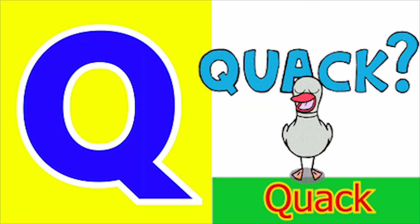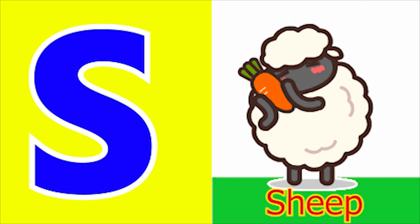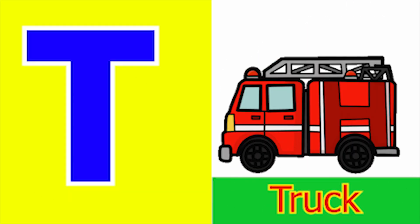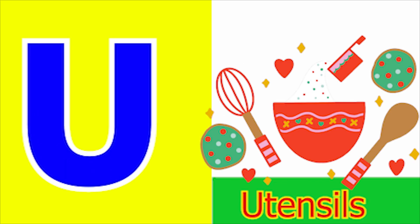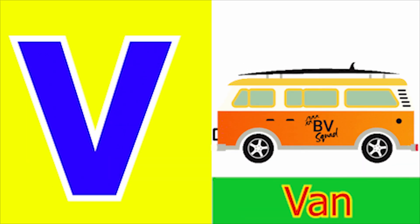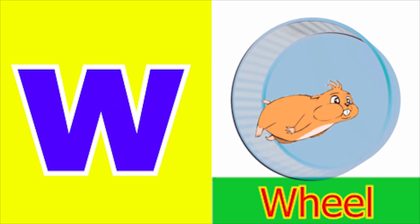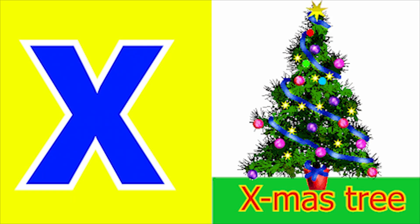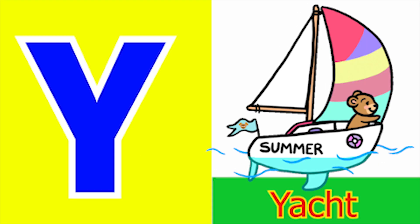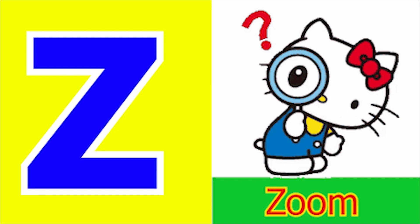Q for quack and R for rain, S for sheep and T for tub, U for utensil, V for van, W for wheel and X for accessory, Y for yacht and Z for zone.